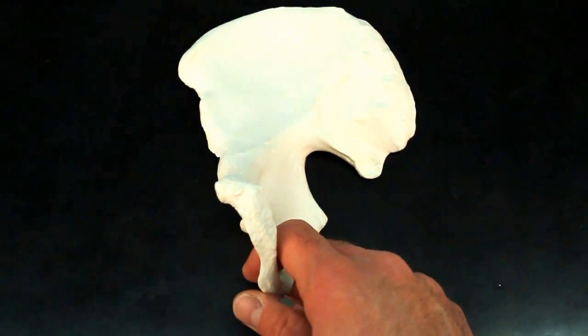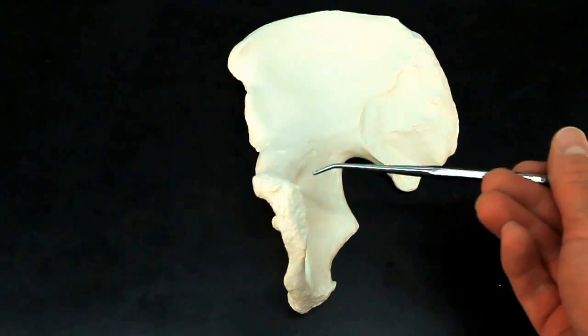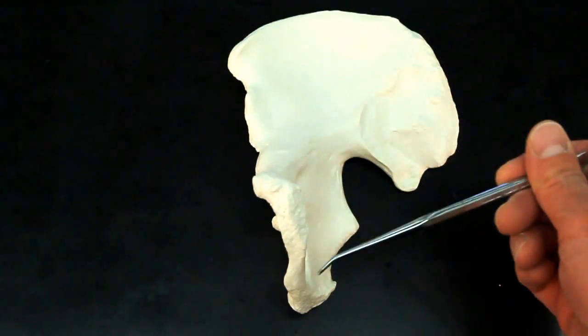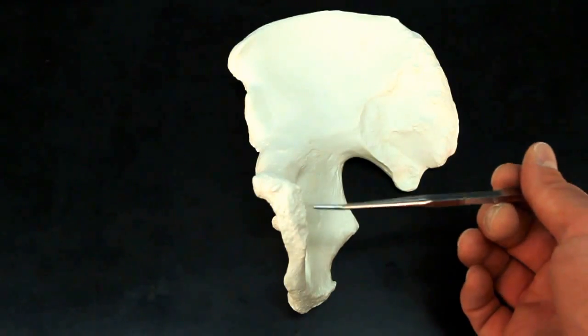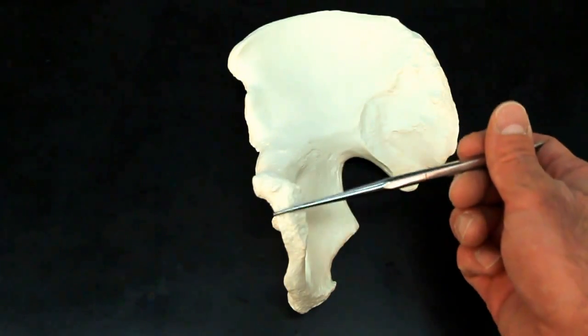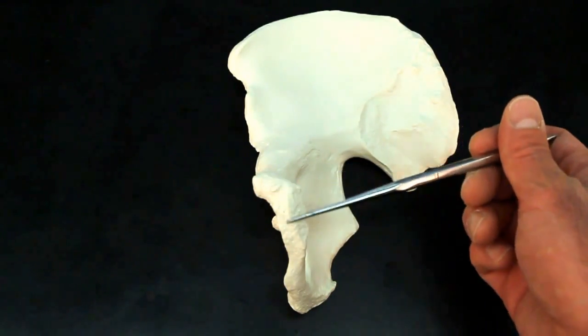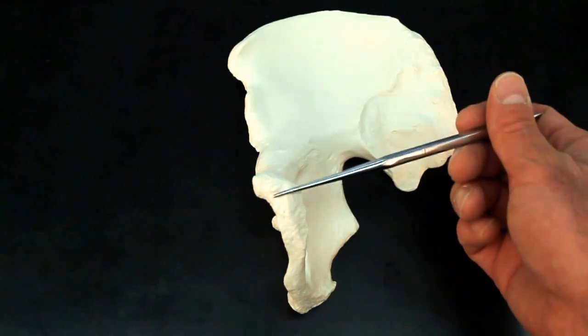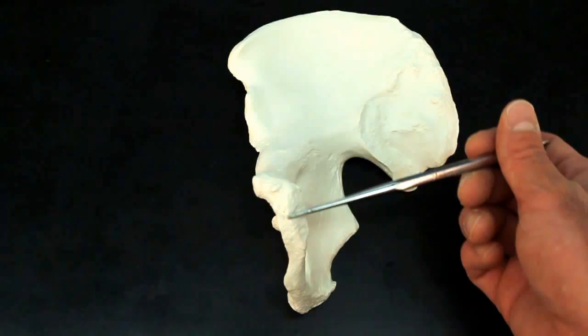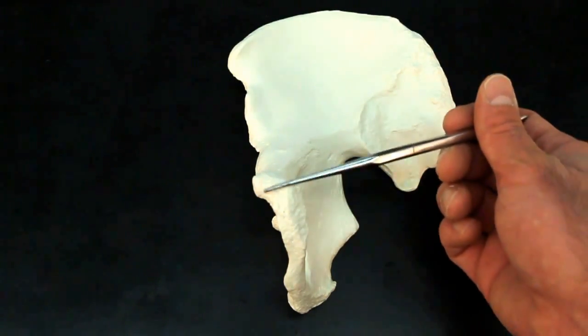Now moving to the anterior side over here, we can see the pubis region. The pubis region is going to have a junction right here, where the two coxal bones join. This will form the pubic symphysis.